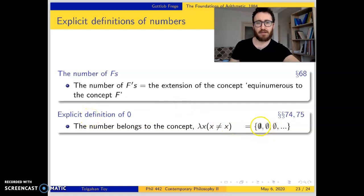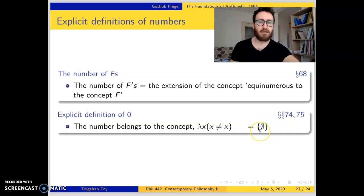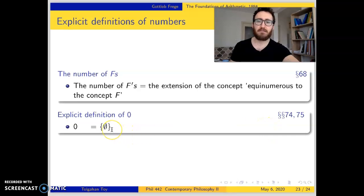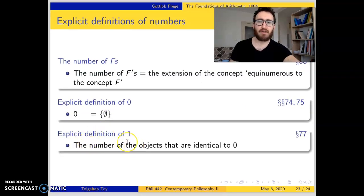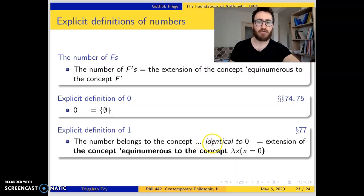The extensions of all these concepts are empty sets. Since in the mathematical universe there is only one empty set, we do not need to iterate them. So zero is the extension which consists only of empty sets. For number one: number one is the number of objects identical to zero — there is only one object identical to zero, which is zero itself. So only one object falls under the concept 'identical to zero,' and number one is the extension of the concept 'equinumerous to the concept λx[x is identical with zero].'